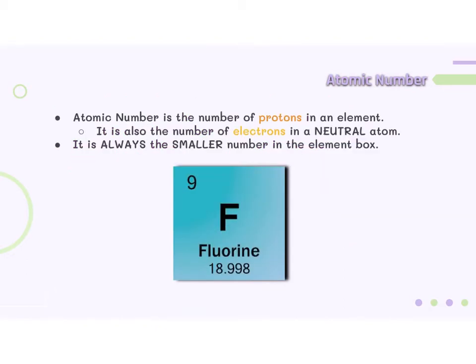The atomic number on the element box on the periodic table is the number of protons in an element. The atomic number is the smaller number in the element box. It's also the number of electrons in a neutral atom. This is vitally important for a few lessons from now when we talk about a non-neutral element. Remember, atomic number is the number of protons in an element, and also the number of electrons in a neutral atom.